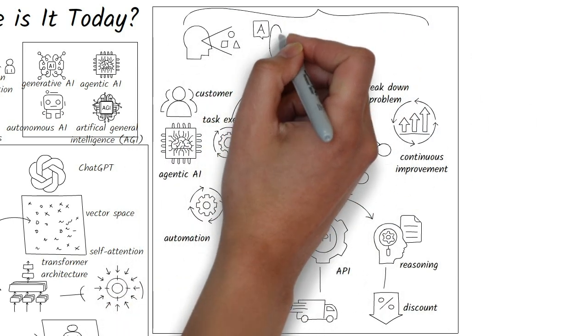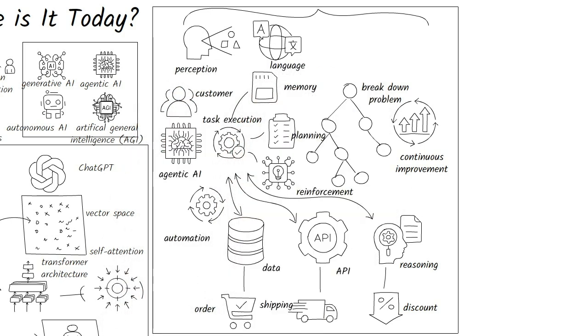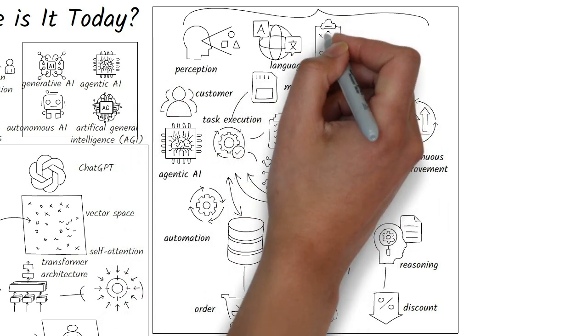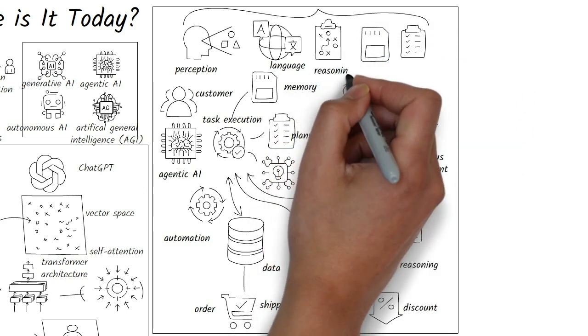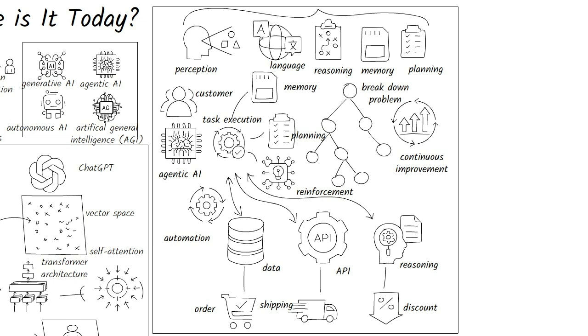Agentic AI relies on deep learning for perception and language understanding, but also integrates with symbolic reasoning, memory, and goal-oriented planning, which go beyond deep learning.